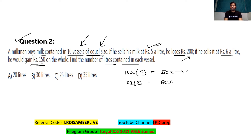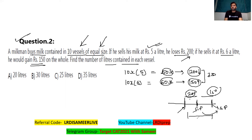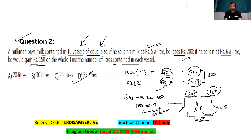At 5 rupees per litre he's losing 200, and at 6 rupees per litre he's gaining 150. The difference between these two values is 350 — a loss of 200 and a gain of 150. So the difference between 60x minus 50x equals 350, meaning 10x = 350, so x = 35. That means every container holds 35 litres. Option D is the correct answer.